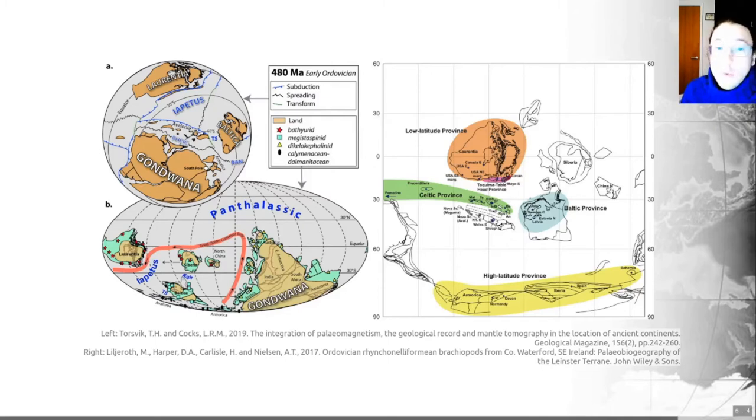We can also identify a Baltic province, otherwise known as the Megistaspid province. These are the light blue or cyan squares here, which are associated with Baltica and are nowadays found largely in northwestern Europe. And this was at temperate southerly latitudes.